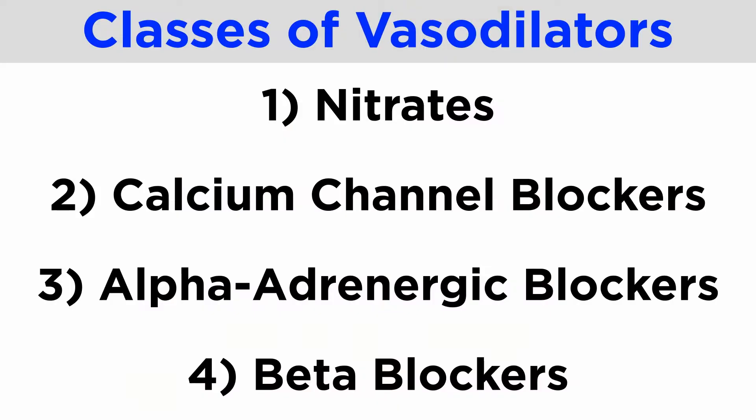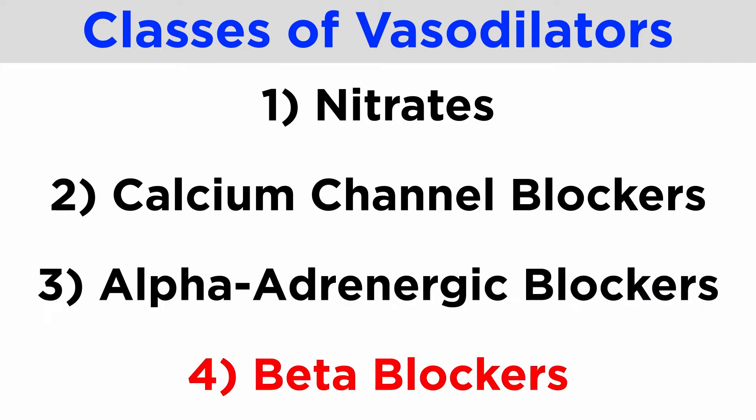There are four main classes of vasodilators which we will discuss. These are nitrates, calcium channel blockers, alpha-adrenergic blockers, and beta blockers.